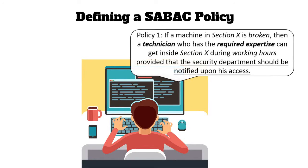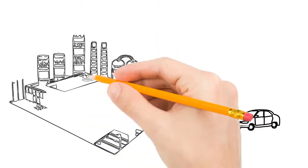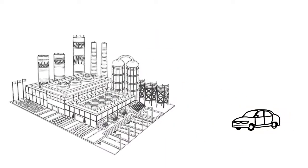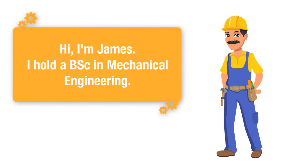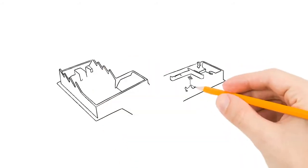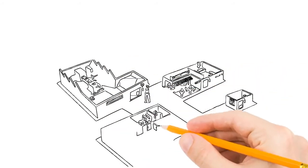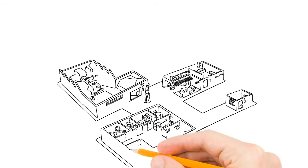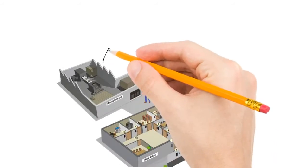The producer of the broken machine sends the technician to the factory. The technician has an attribute called 'education,' whose value is 'bachelor degree in mechanical engineering.' When he wants to get inside the section of the broken machine, the access control engine evaluates the request based on the defined policy and provided attribute values.